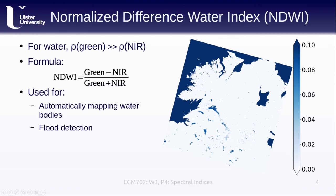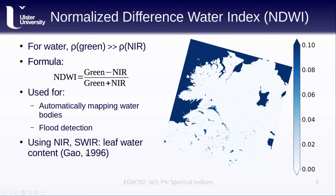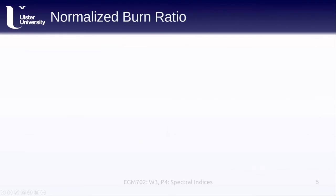There is a second NDWI that was published at the same time, using the near-infrared reflectance and the shortwave infrared reflectance. This one tells us something about the leaf water content for vegetation. It can be a little confusing because these are two different indices with the same name that look at different things.